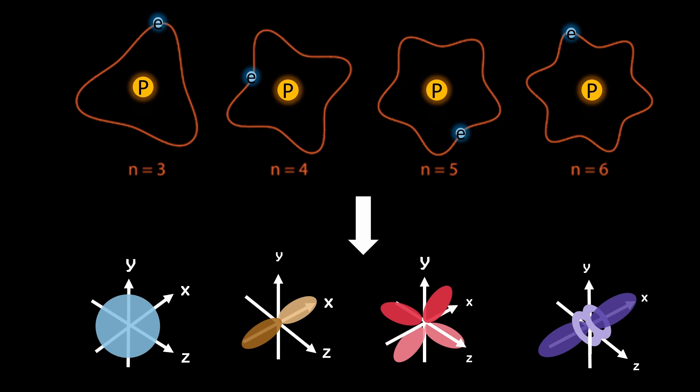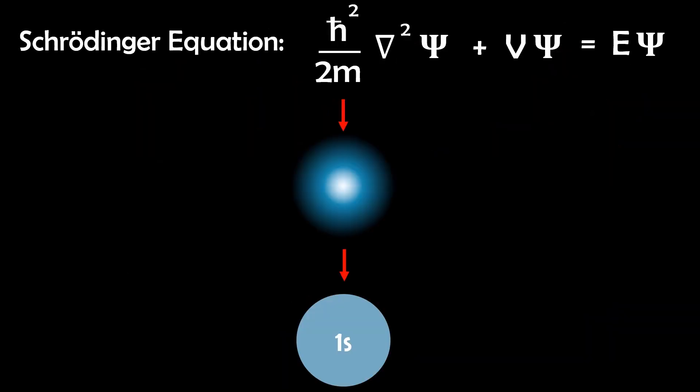In previous videos I've discussed how atomic and molecular structures are based on wave mechanics which define orbitals. The Schrodinger equation which describes these wave mechanics can be solved approximately to give the probability densities and energies of these orbitals.